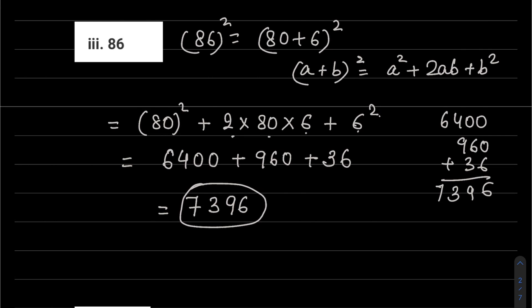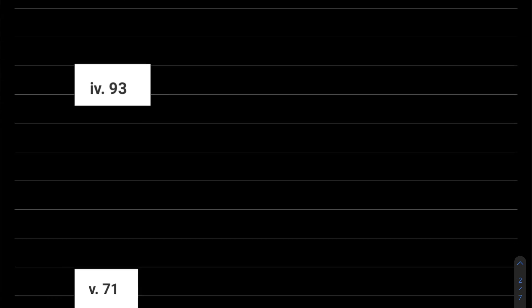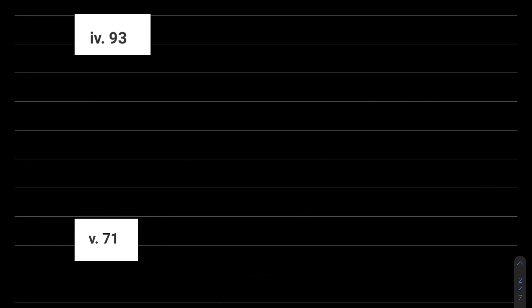And 6 squared, 6 into 6, is 36. Adding all these, our answer comes to 7396. This is using the identity method. Otherwise you can also directly multiply 86 into 86, and you'll get the same answer, 7396. So according to what your teacher is asking for, you can do it either way.